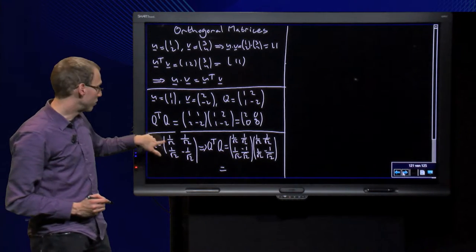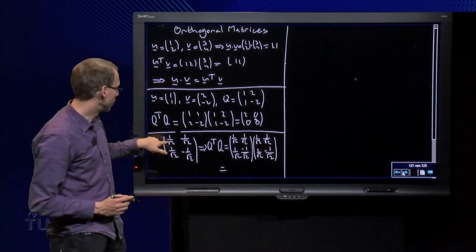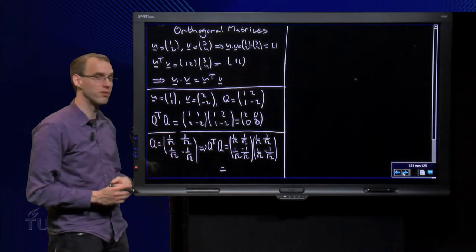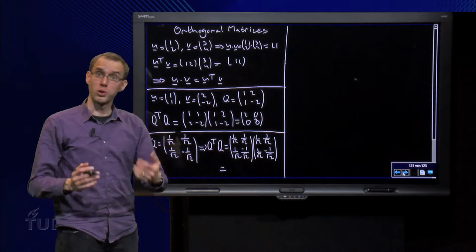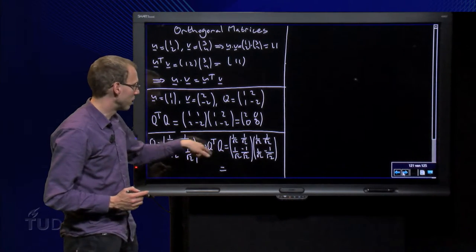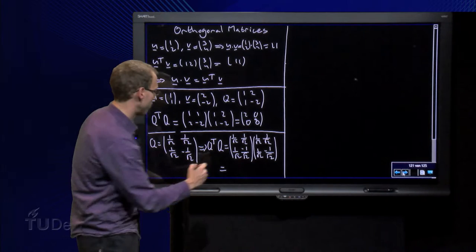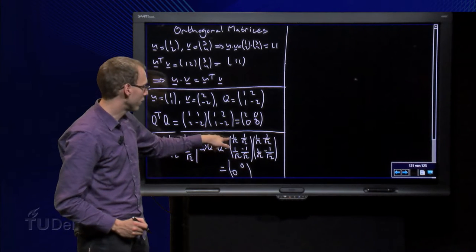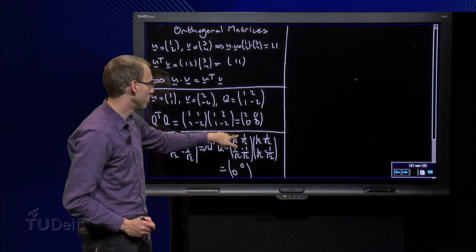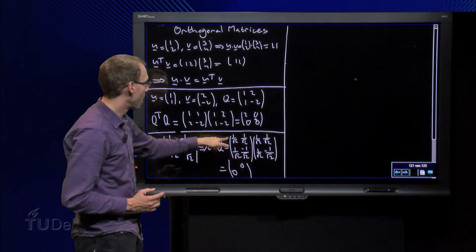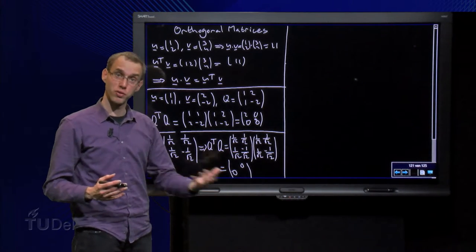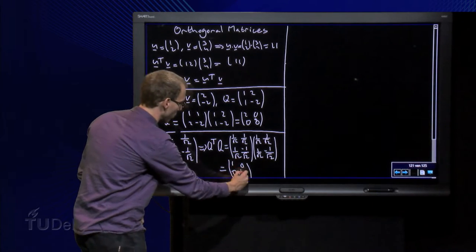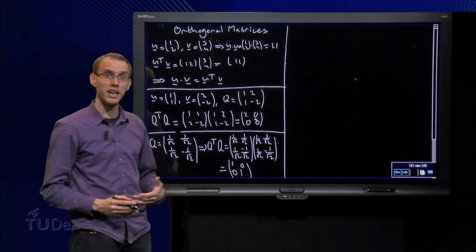For example, this choice. If we normalize the vectors of Q, I get 1 over square root of 2, 1 over square root of 2, 1 over square root of 2, and minus 1 over square root of 2, still orthogonal of course. And if we then compute Q transpose times Q, we find, well, off diagonal still the zeros, but on the diagonal we get 1 over square root of 2 times 1 over square root of 2 plus 1 over square root of 2 times 1 over square root of 2. So 1 half plus 1 half equals 1, and the same here also a 1.